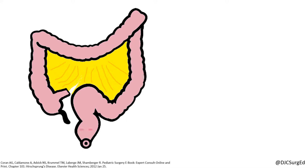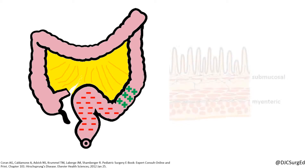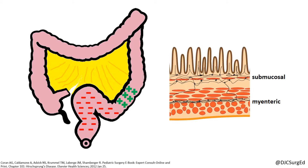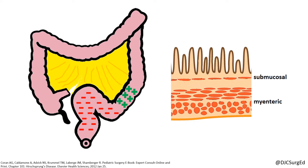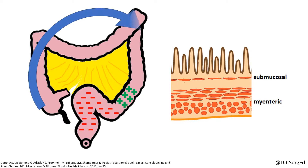Hirschsprung's disease is a disorder of the enteric nervous system, characterized by the absence of ganglion cells in the myenteric and submucosal plexuses of the distal colon, leading to a functional intestinal obstruction. This is thought to be due to abnormal caudal migration of neural crest cells.